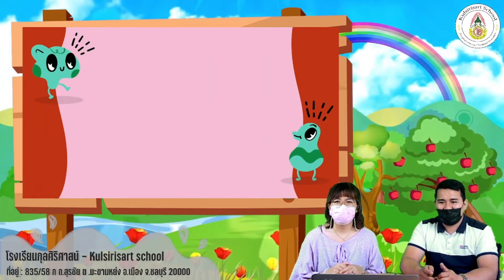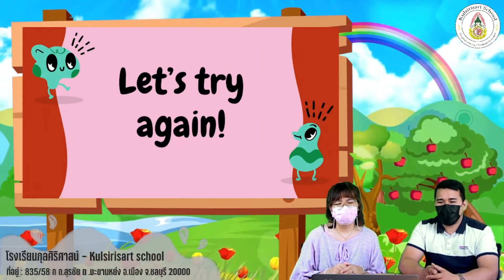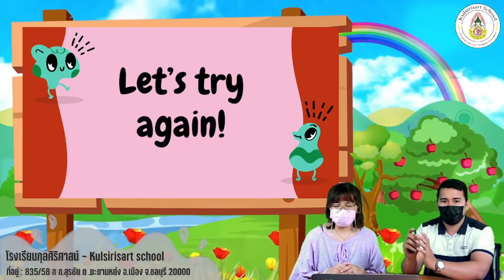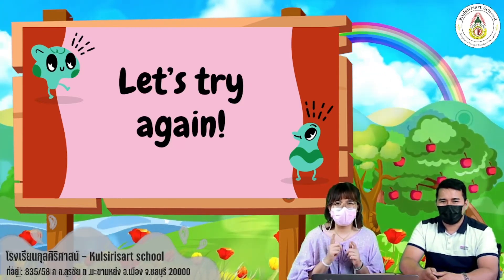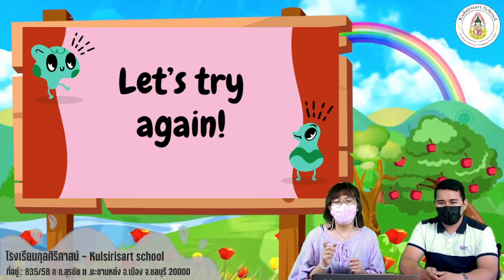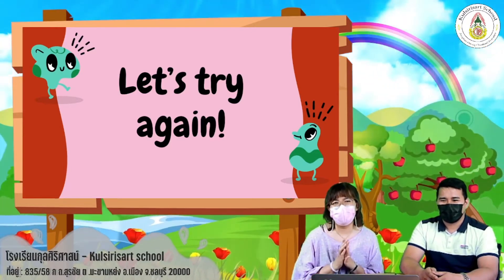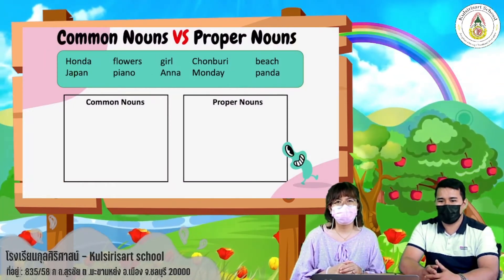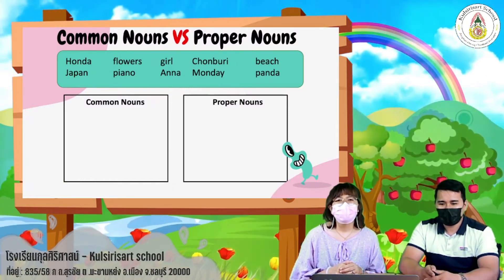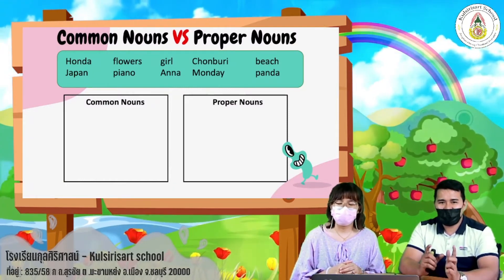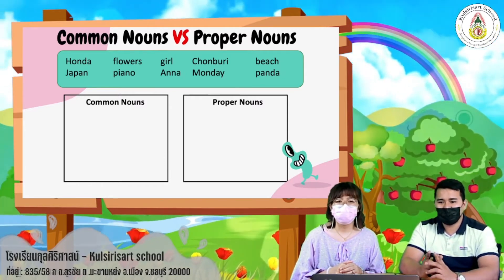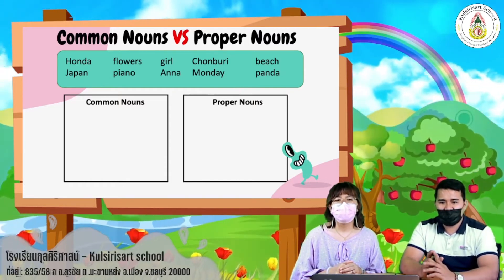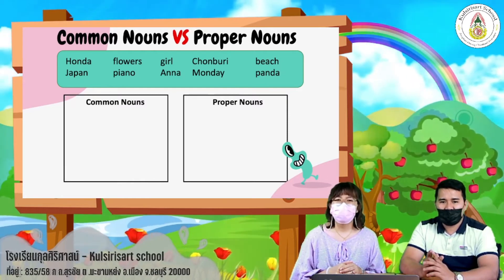Now in this activity, I want you to separate common nouns from proper nouns. Let's start our activity with the words from the box: Honda, Flowers, Girl, Chonburi, Beach, Japan, Piano, Anna, Monday, Panda.